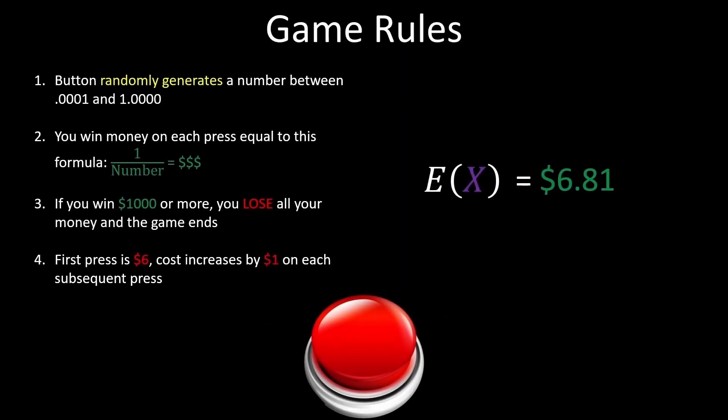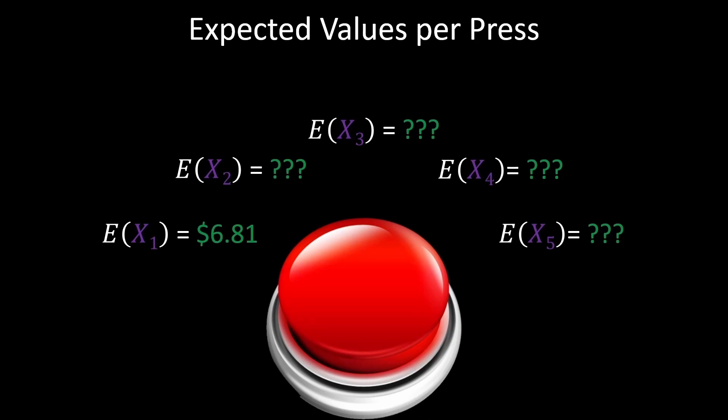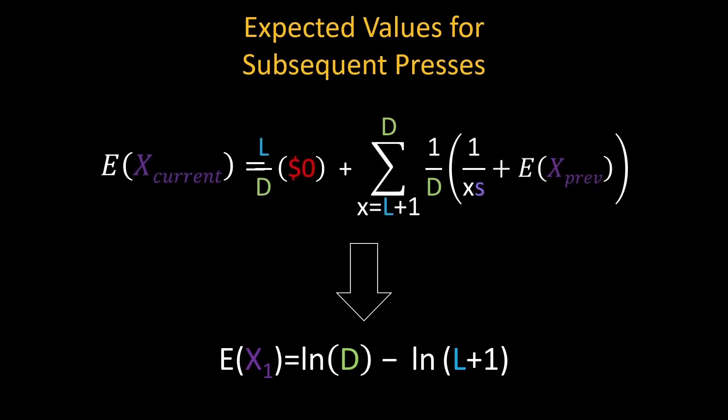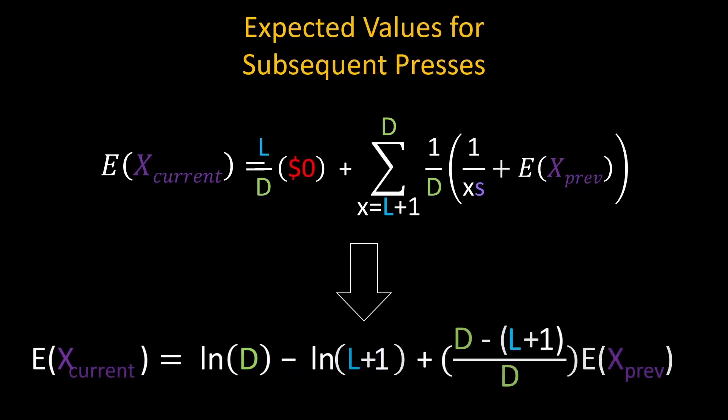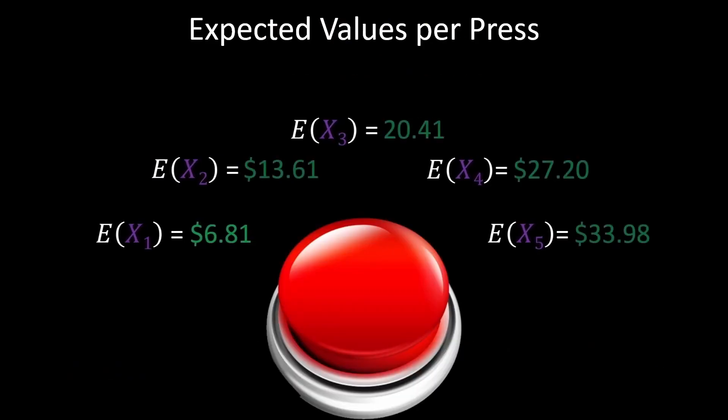And that's it. We found the expected value, but that's only for the first button press. We still have four more we can choose to do. Luckily, we can repeat the process we just did with only one slight difference. Instead of the expected value equaling this expression, it now equals this one where we add the previous button's value onto the current one. This doesn't change too much. Mostly, it just alters the final calculation from this expression to this one. I'll save you some time and calculate the values for each step of the way.